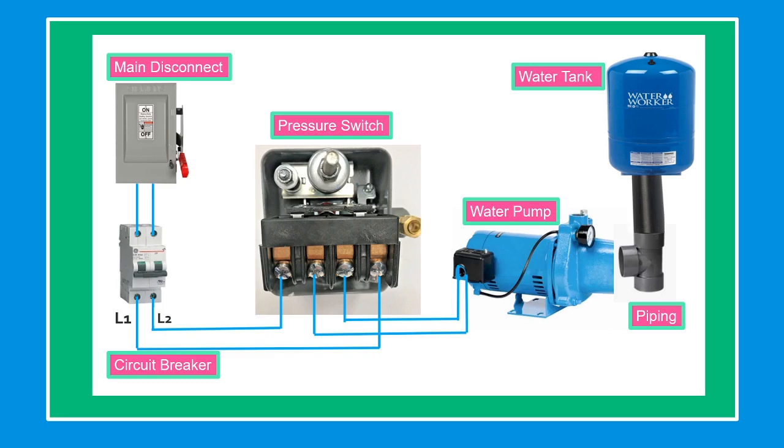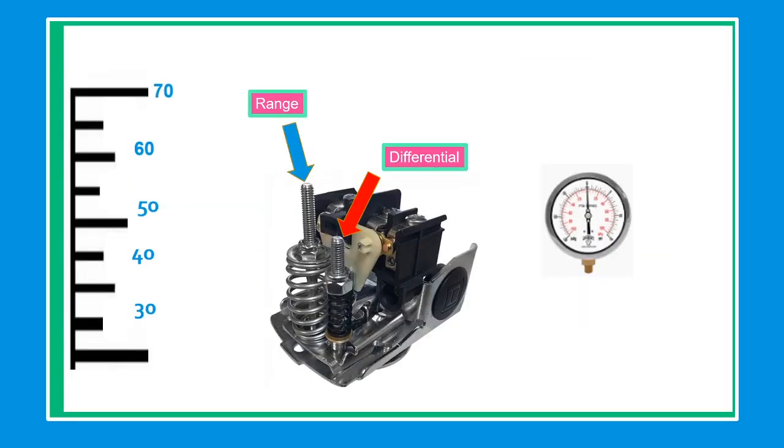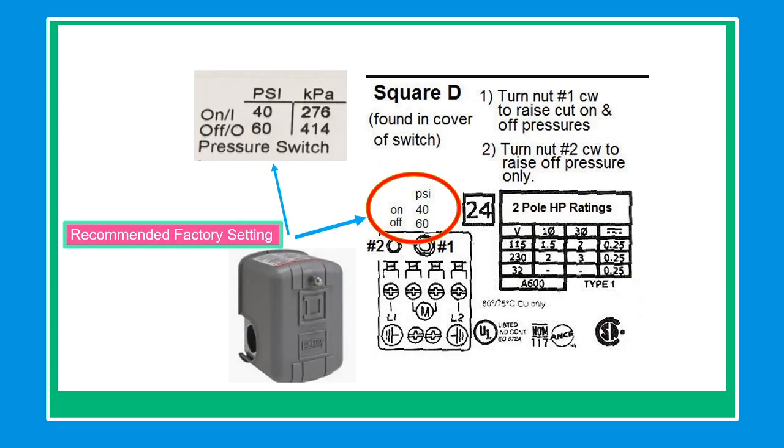We have two pressure type adjustments: the center is your range and at the side is your differential. You can find factory preset setting adjustments inside the cover or in the box. For submersible pump, 40 to 60 psi, and for jet pump with smaller horsepower that can be used at home or irrigation, mostly run 20 to 40 psi or 30 to 50 psi.